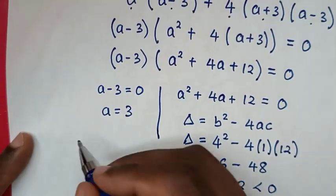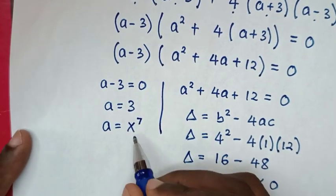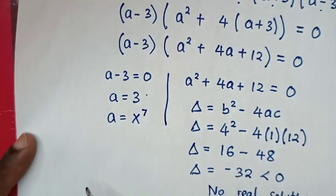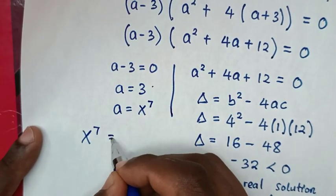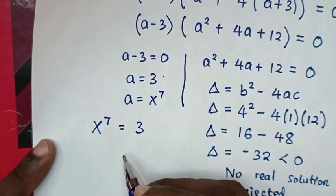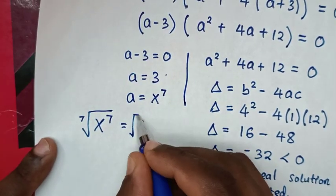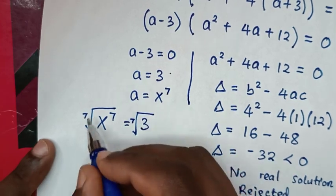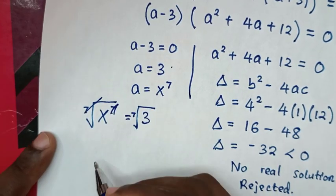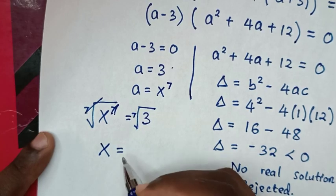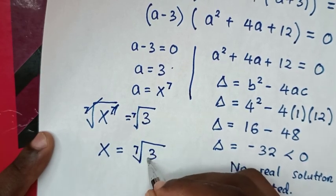From a equals x power of 7, we compare these two equations. It gives x power of 7 is equal to 3. We then apply the 7th root to both sides, and the 7th root cancels with the power of 7, giving x is equal to the 7th root of 3.